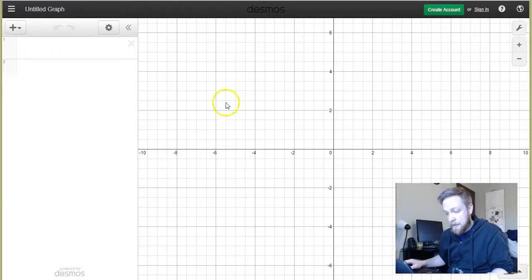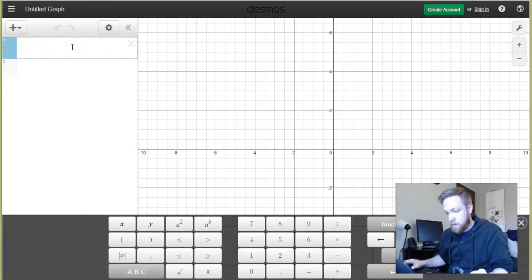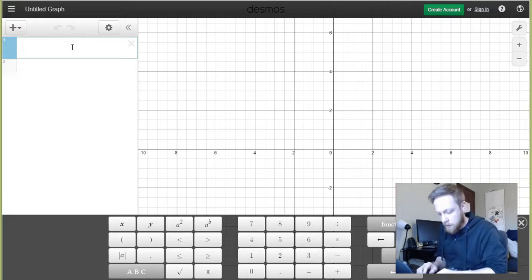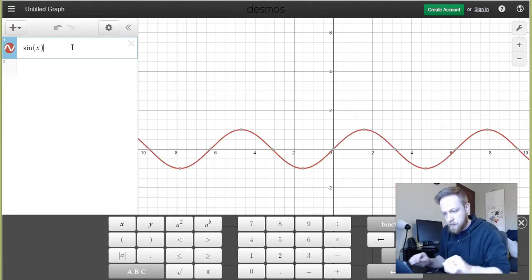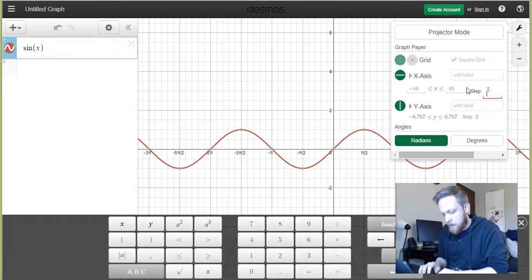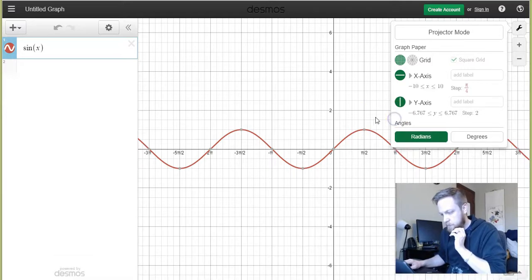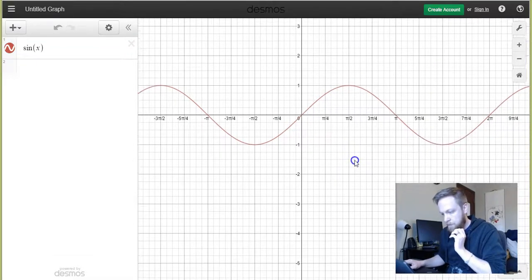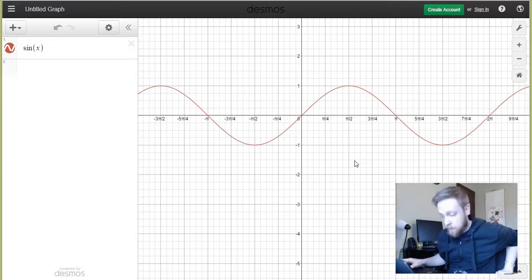All right, here we are with Desmos. You guys know how much I love Desmos. I want to show you something that involves sine and cosine. So this is the normal cosine graph. Let me adjust this so that it goes in steps of pi over 4. Okay, so we're seeing the normal sine graph.